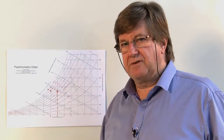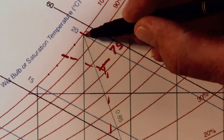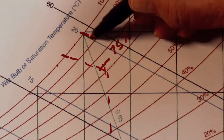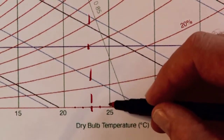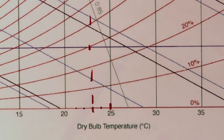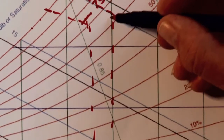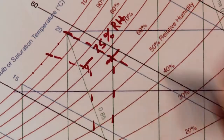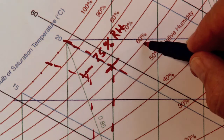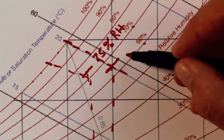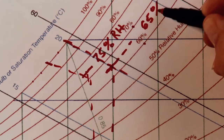Let's do one more example. Say we've got a wet bulb temperature of 20 degrees Celsius and a dry bulb temperature of 25 degrees. We plot up this graph and the intersection of these two points tells us the relative humidity — between 60% and 70%, so we would have a reading of 65% relative humidity.